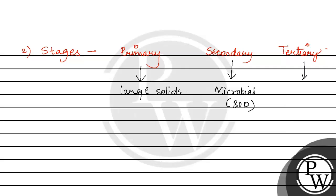Tertiary treatment में क्या होता है — it is the further purification process, जिसमें और ज़्यादा advanced filtration होते हैं, chemical treatment होती है, and additional microbial processes होते हैं, ताकि remaining contaminants को हम remove कर सकें।